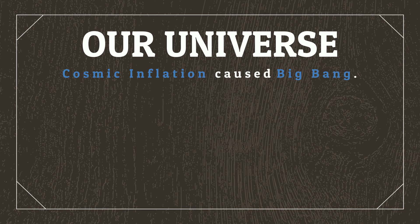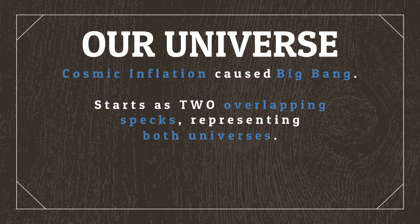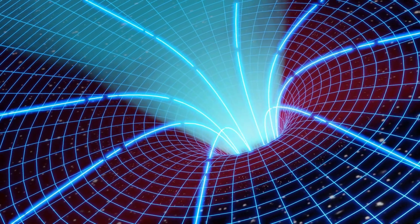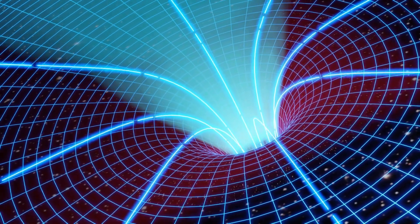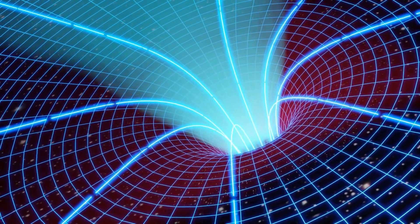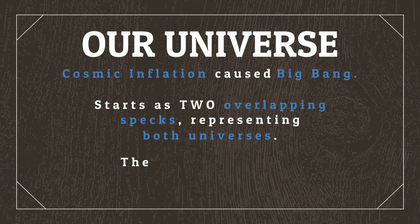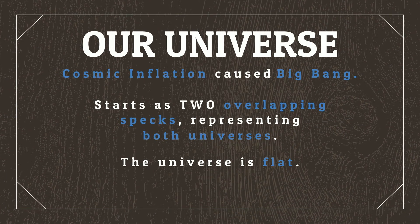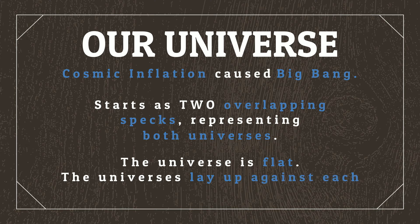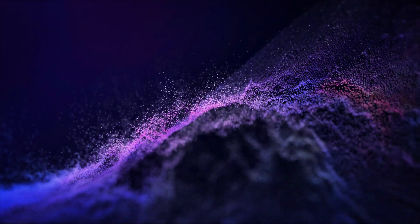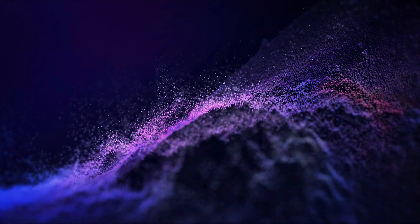But instead of the universe starting as a single speck, it's going to start as two overlapping specks, representing the universe we'll be working with as well as its secondary adjacent universe. This secondary universe is therefore both pushed away and pulled towards the primary universe using a force similar to gravity. We know with reasonable certainty that our own universe is flat, and the universe we'll worldbuild will be too. Therefore, the two universes we'll be working with will lay flat up against each other, like two expanding disks. Just like in our real-life universe, this universe is going to be a hot soup of atomic particles and wouldn't have any light yet.